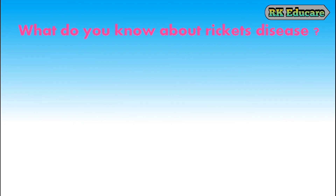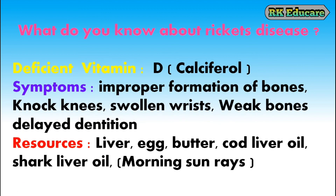What do you know about Rickets disease? Rickets disease is due to deficiency of vitamin D, also called calciferol. Symptoms include improper formation of bones, knock knees, swollen wrists, weak bones and delayed dentition. Liver, egg, butter, cod liver oil, shark liver oil and morning sun rays are the resources of vitamin D.